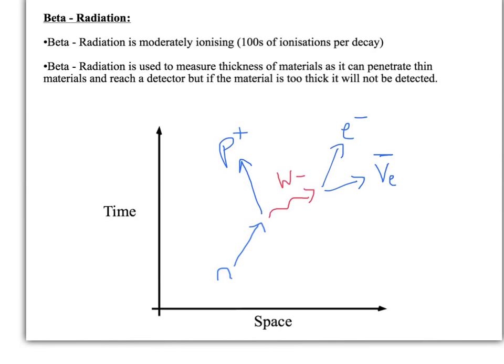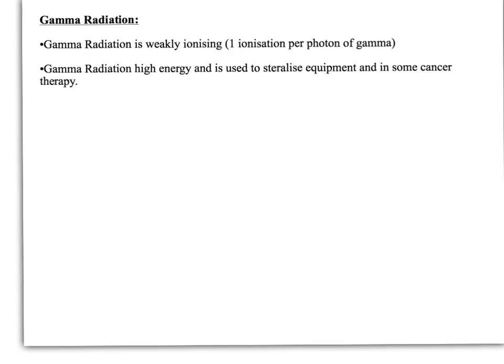Let's move on to the final type: gamma. Gamma radiation is the weakest in terms of ionisation — it has one-to-one ionisation, so one photon of gamma radiation can ionise one atom. But gamma radiation is very high energy, which makes it the most dangerous, and also makes it very useful for sterilising equipment or treating cancer cells. The first thing to know is that gamma radiation is released after alpha or beta decay — it doesn't necessarily happen by itself, it happens as a by-product of alpha or beta.